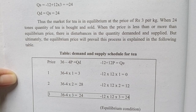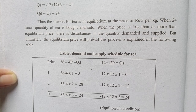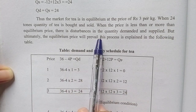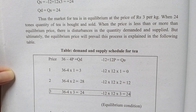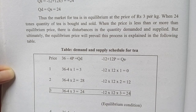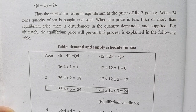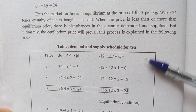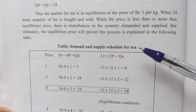When the price is less than or more than the equilibrium price, there are disturbances in the quantity demanded and supplied, and prices adjust accordingly.